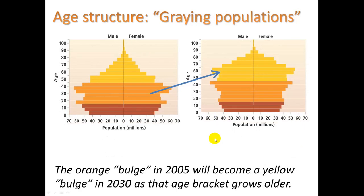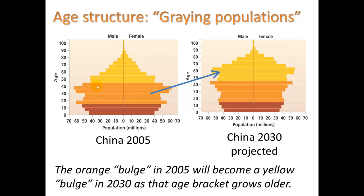These are snapshots in time. This is China in 2005 — their one-child policy has been effective at reducing the number of children being born, and their bulge is in the middle age. Projected to 2013, we would expect this bulge to move up. This is one way we can use age structure diagrams to predict changes that will come to a population in the future.